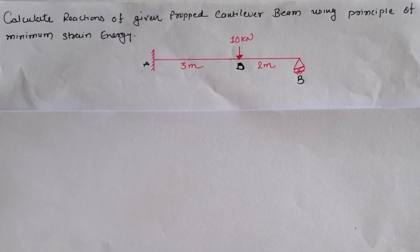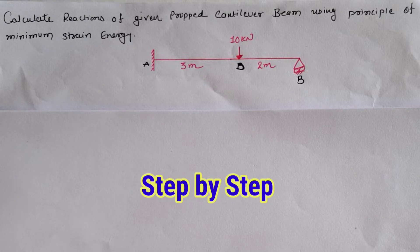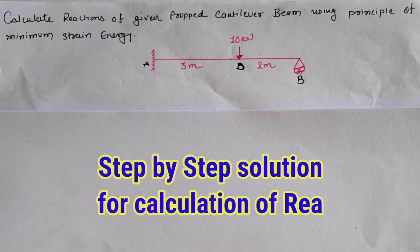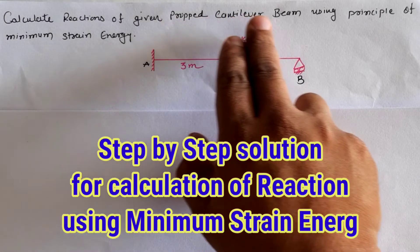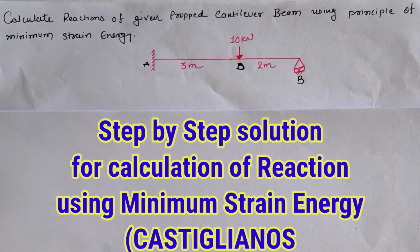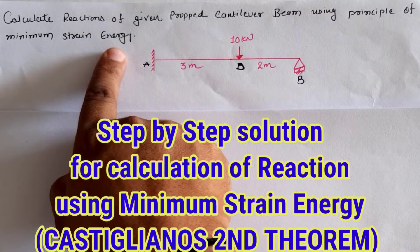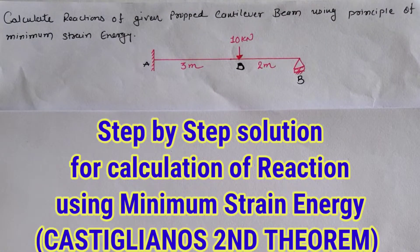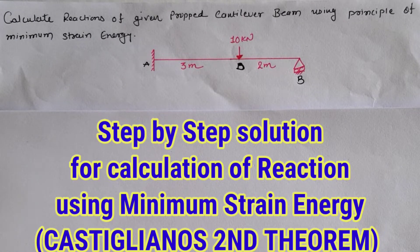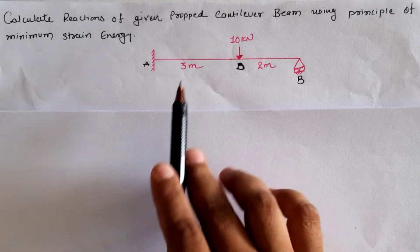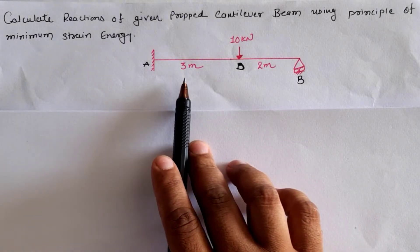Hello friends, today we are going to calculate the support reactions of a given propped cantilever beam using the principle of minimum strain energy, which is also known as Castigliano's second theorem of energy principle.